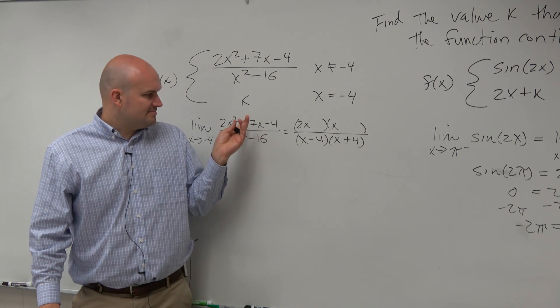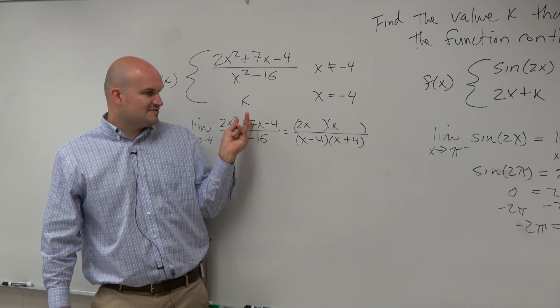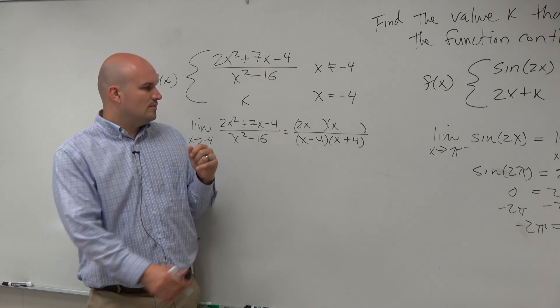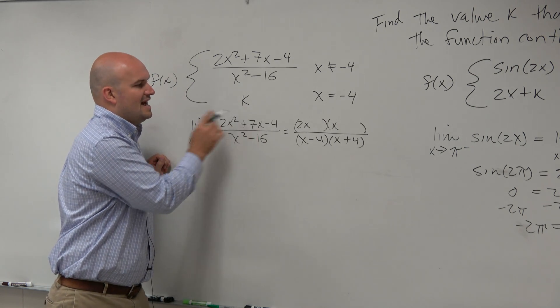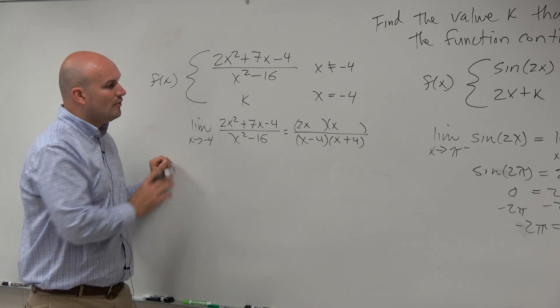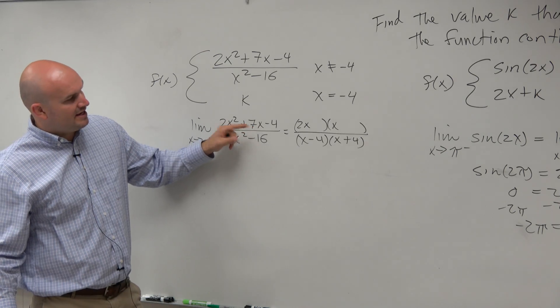And again, what I'm trying to look at is my middle terms need to be positive 7x. So I've got to think of numbers that are going to multiply to give me negative 4, but then add to give me a positive 7x.